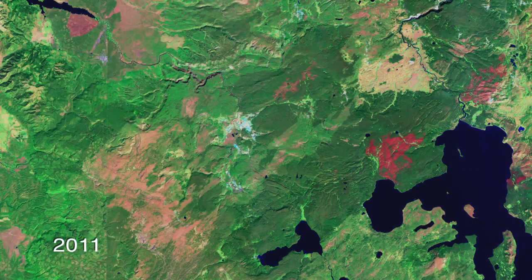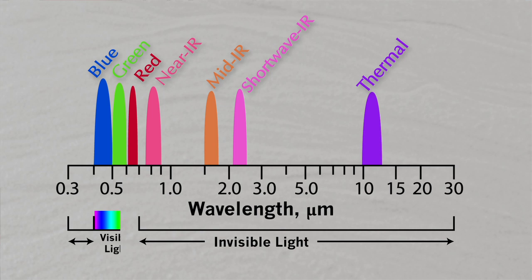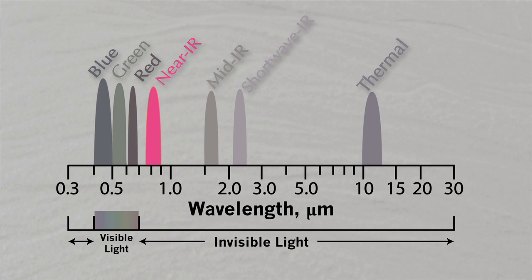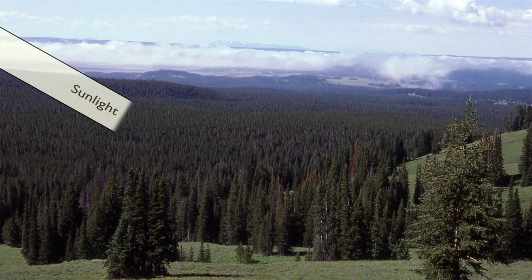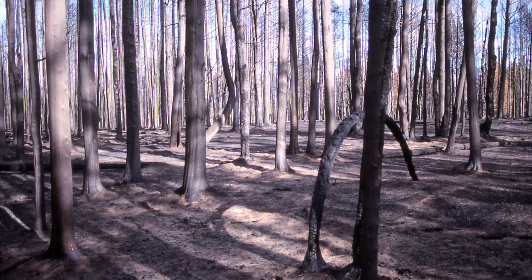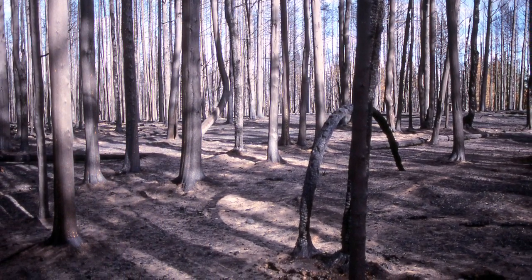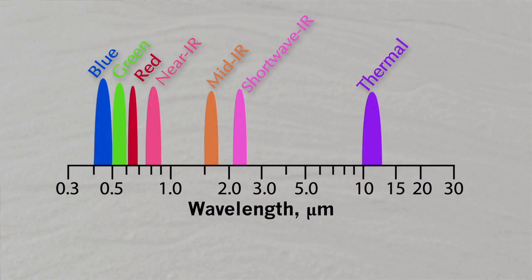Landsat actually images the Earth using a variety of spectral bands in different wavelengths. Some of these wavelengths are not visible to the human eye, but are very useful for assessing the composition of the land surface. The near-infrared wavelength, for example, is sensitive to leaf area because the chlorophyll in leaves tends to reflect a lot of light in the near-infrared. The reflectance of the fire scars tends to be dominated by the char left on the ground, which initially tends to be fairly bright in the short-wave infrared.